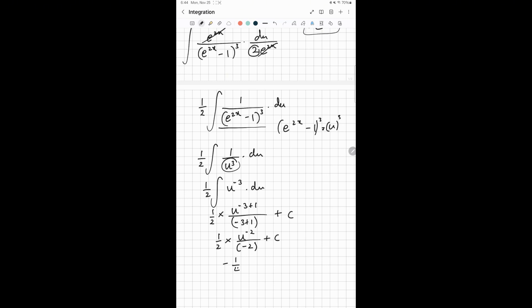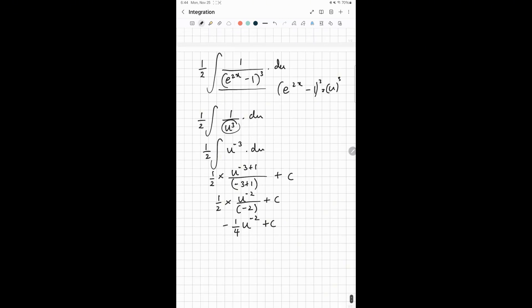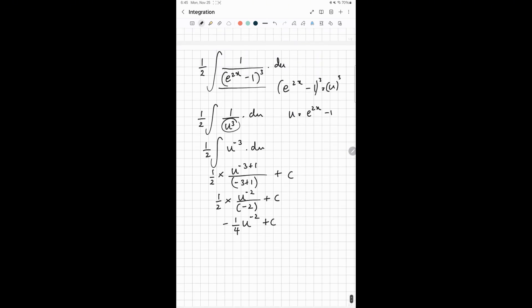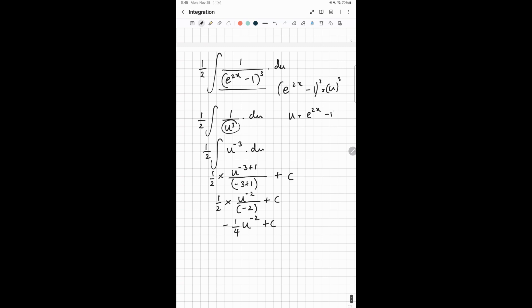We had a substitution of u equals e^(2x) - 1, right? So for your final answer, you can put this back in. So you can write -1/4 (e^(2x) - 1)^(-2) plus c.